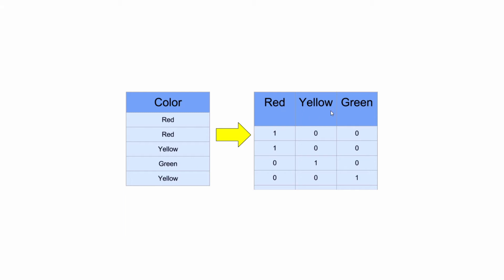We can see that we have three new columns: red, yellow, and green, with values 1 and 0. A value of 1 indicates the color is present, while 0 indicates it is absent. Similarly for yellow, wherever the value is 0 the color is absent, and wherever it is 1 the color is present and all other variables will be 0. If the value of red is 1, then yellow and green will be 0. If the value of green is 1, then yellow and red will be 0.